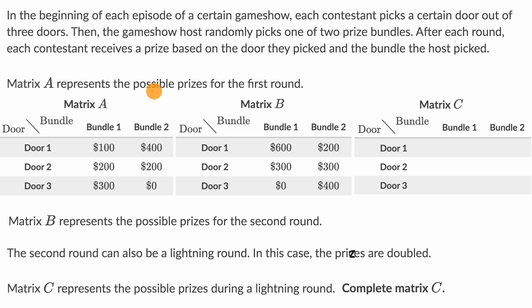Matrix A represents the possible prizes for the first round. For example, if the contestant picks door three and the host picks bundle one, the prize is $300, but if the contestant picks door three and the host picks bundle two, the prize would be $0.